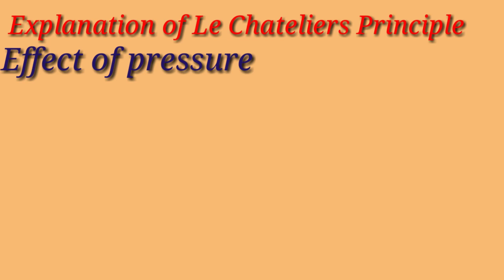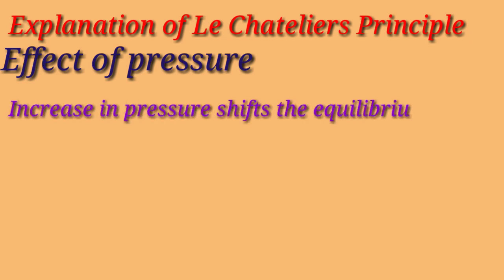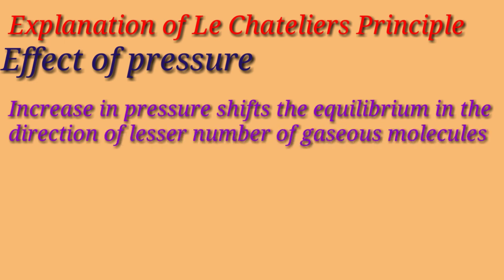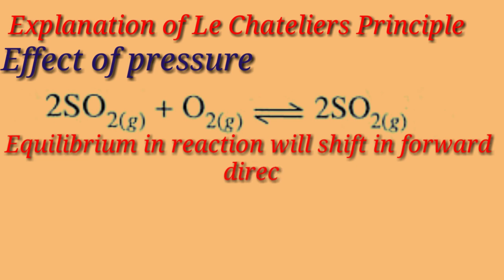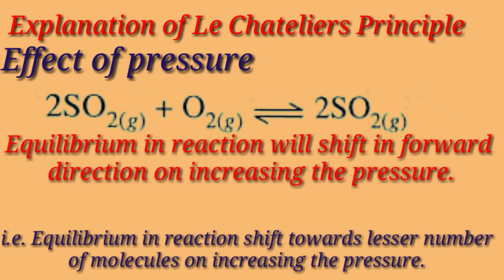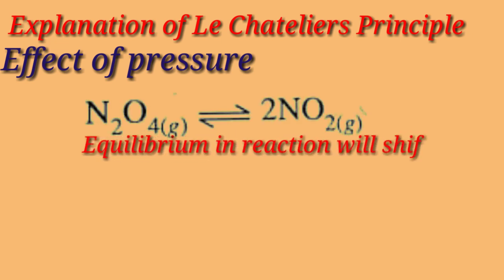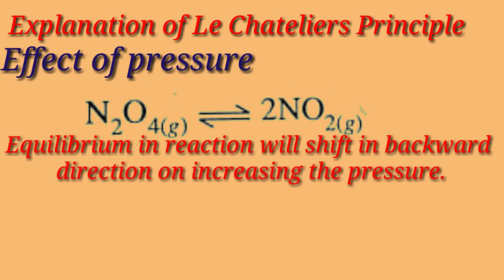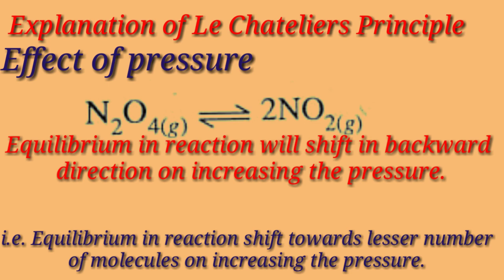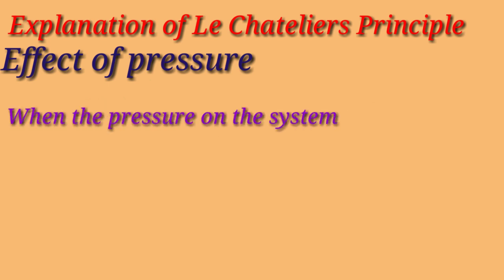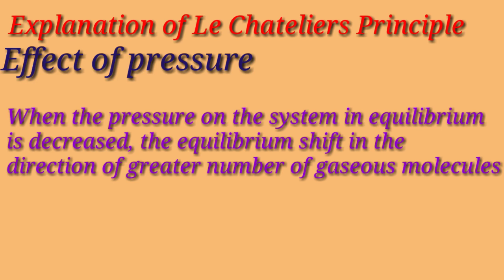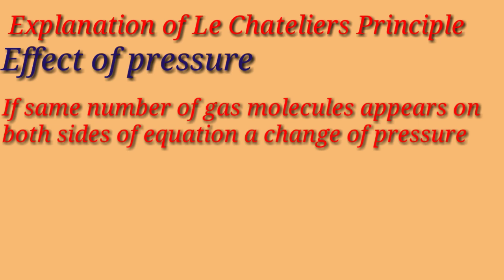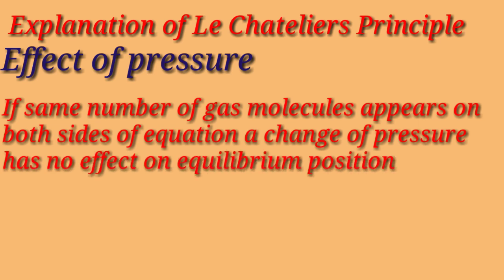Next is the effect of pressure. Increase in pressure shifts the equilibrium in the direction of the lesser number of gaseous molecules. In one reaction, the equilibrium will shift in the forward direction on increasing the pressure — that is, towards the lesser number of molecules. In another reaction, the equilibrium will shift in the backward direction on increasing the pressure. When pressure on the system is decreased, the equilibrium shifts in the direction of the greater number of molecules. If the same number of gas molecules appears on both sides of the equation, a change of pressure has no effect on equilibrium position.